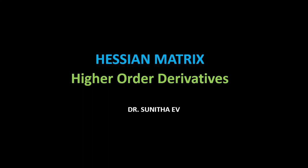Hi everyone, welcome to the session. Today we are going to see the Hessian matrix, or higher order derivatives. In the previous video we saw the Jacobian matrix — represented as J — which was the first order partial derivative. In the Hessian, we take the second order derivative.